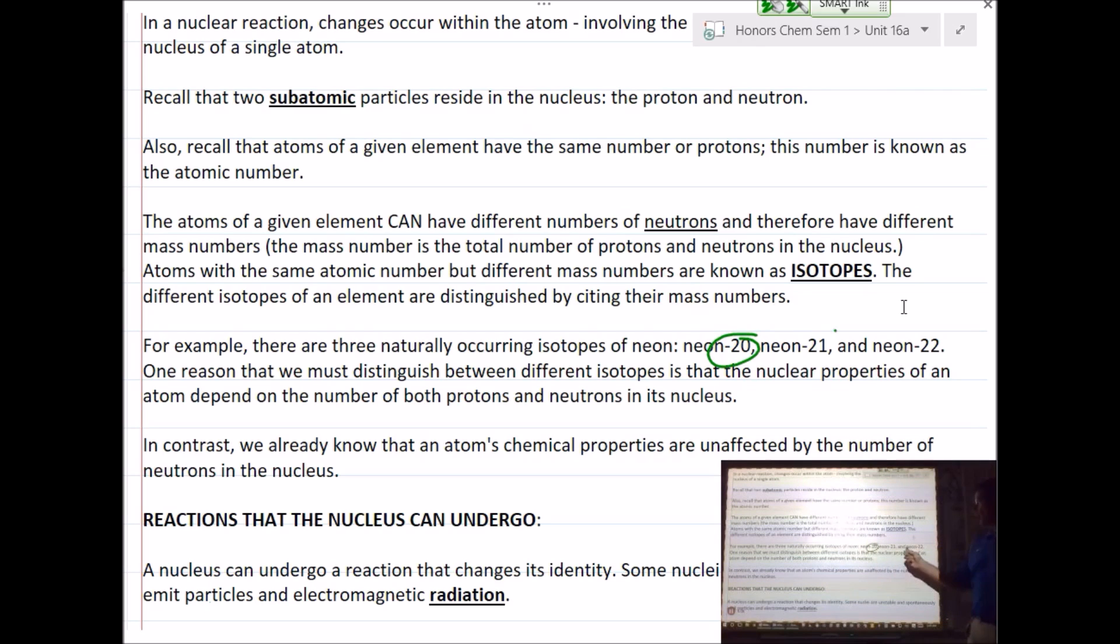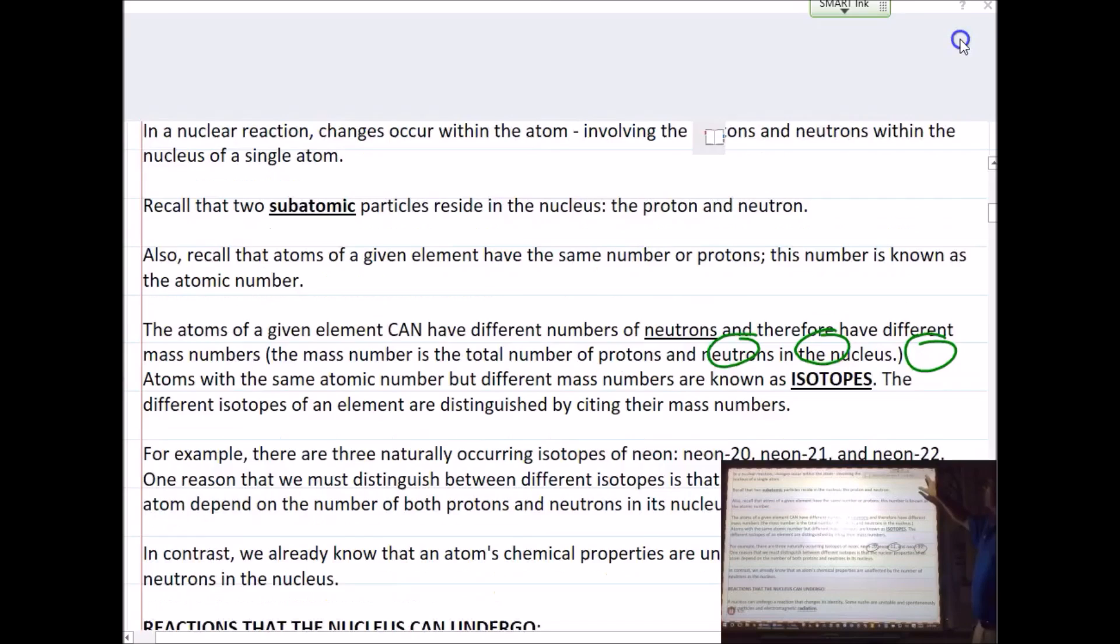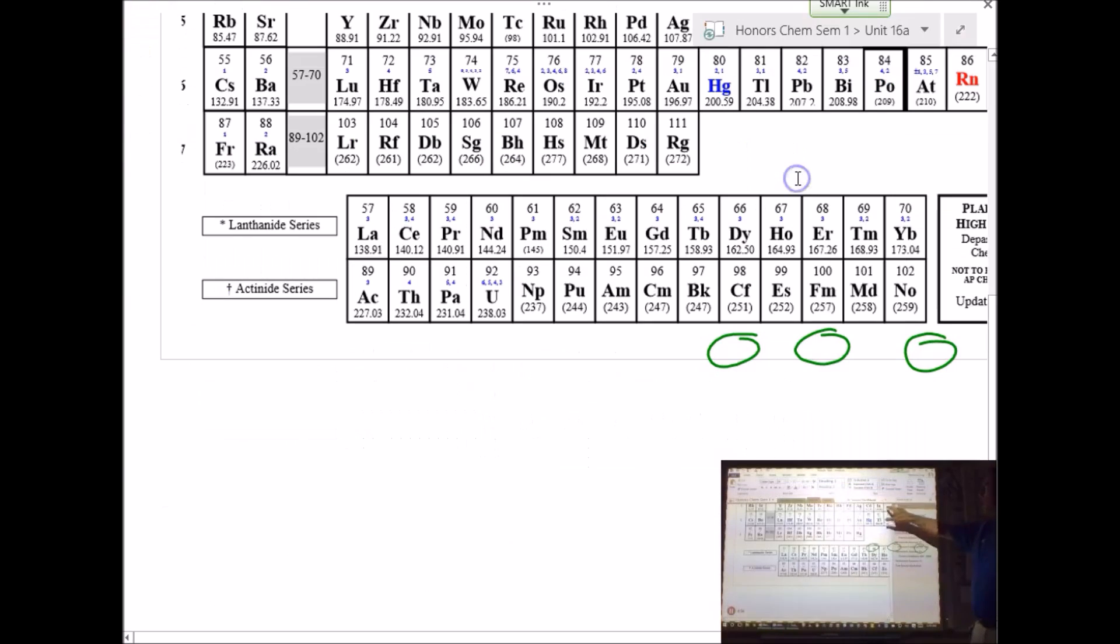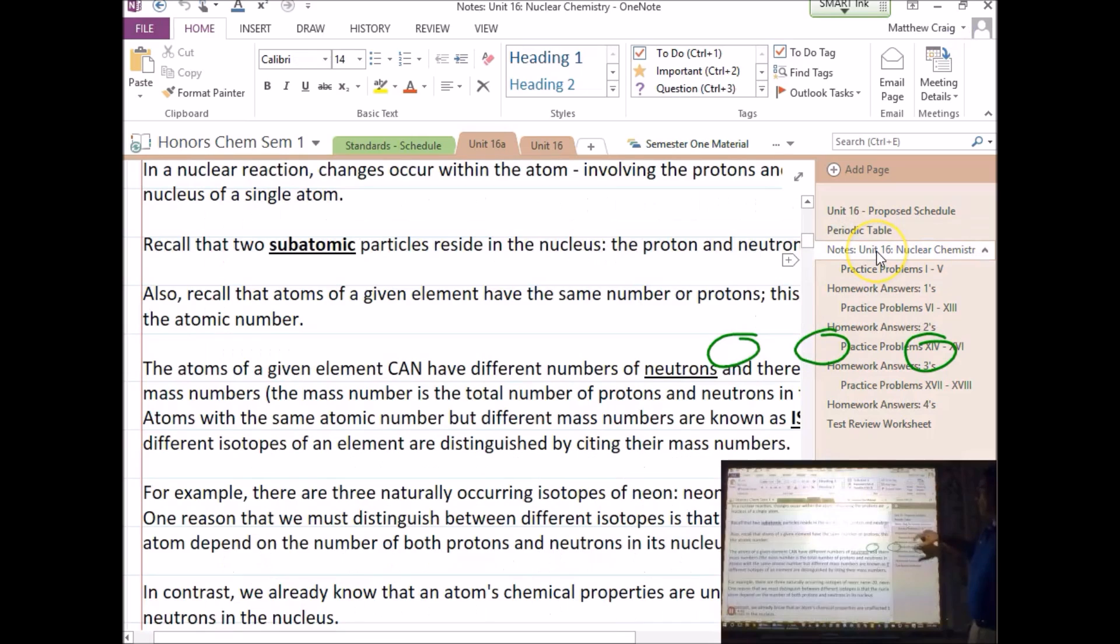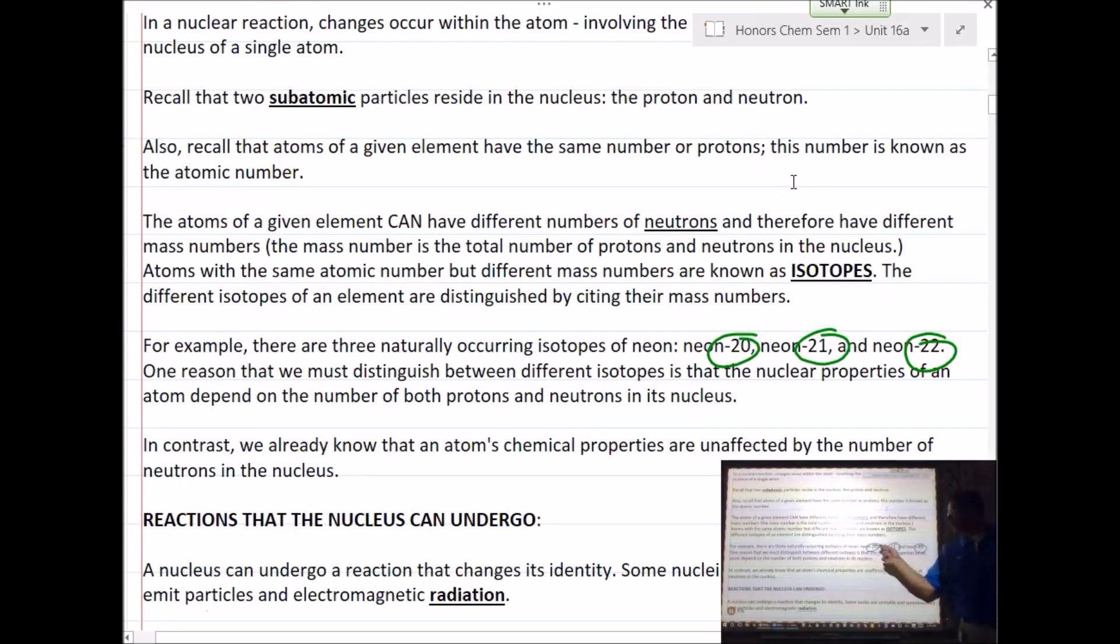Keeping in mind that if you see neon 20, neon 21, neon 22, what do those numbers on the back end represent again? The mass. It's the mass number. Because the number of protons identifies what you're looking at. If you look on your periodic table, and I did put a periodic table on here for you guys, neon has a number of protons, 10. The numbers on the back end are the mass. And what contributes mass? Protons and neutrons.